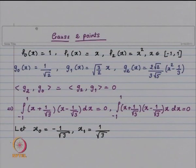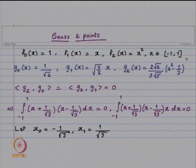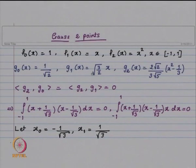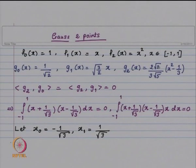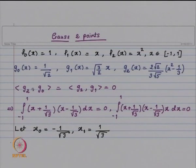Let us look at what we did last time. Our functions were f₀(x) = 1, f₁(x) = x, and f₂(x) = x² on [-1, 1]. From these three functions, we constructed g₀(x) = 1/√2, a constant polynomial; g₁(x) = √(3/2)·x, a linear polynomial; and g₂(x) = (x² − 1/3) times a normalization constant, which makes the norm of g₂ equal to 1. This function g₂ is perpendicular to the constant polynomial g₀ and also perpendicular to the linear polynomial g₁.